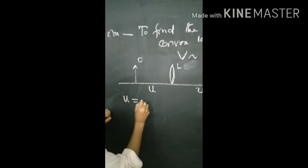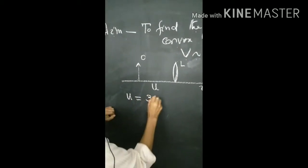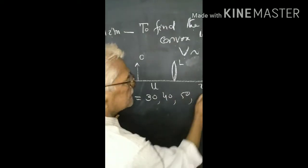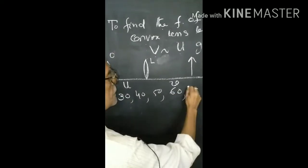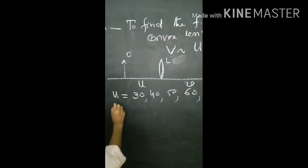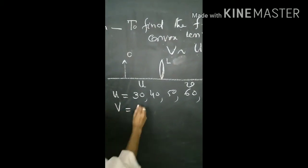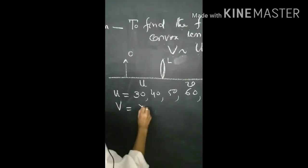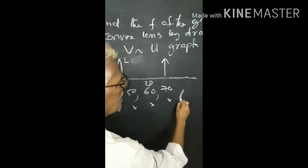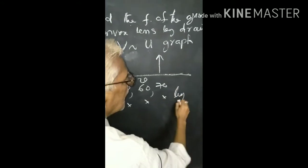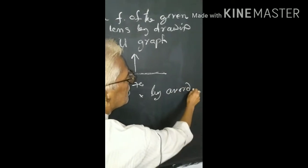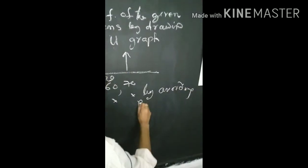This u you can write as 38, 48, 58, 68, 70. Calculate v 5 times by avoiding parallax.